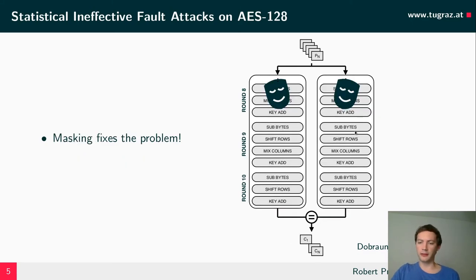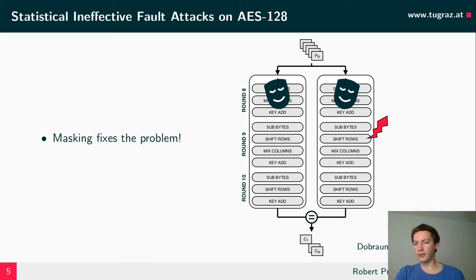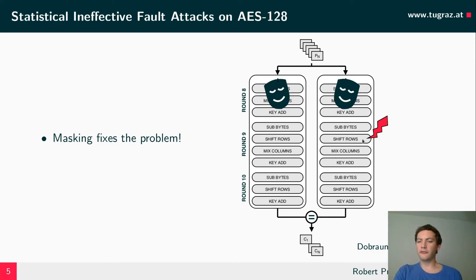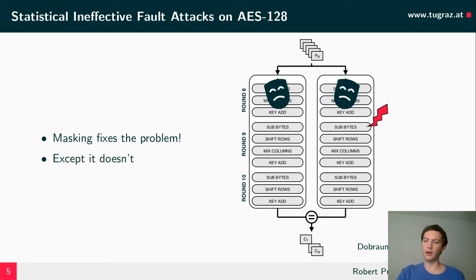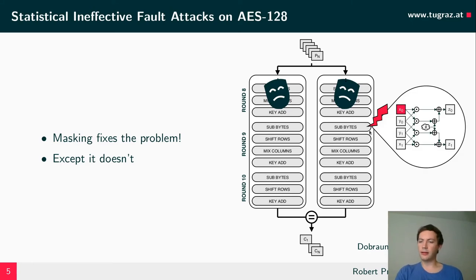What about masking? At first glance it seems like masking fixes the problem, and it kind of does. If we perform a fault injection in the linear layer, and the attacker targets one of the redundant computations affecting only one share of the masked implementation, then the other share will pull back the distribution of the underlying native value to a uniform distribution. So using fault injections in the linear layer of a masked and redundant computation will not be exploitable via SIFA. However, the situation is different for fault injections in a nonlinear operation such as SubBytes. To understand why, we need to take a closer look at what happens within a nonlinear operation.